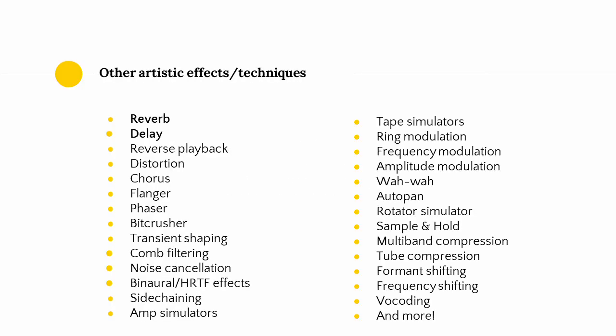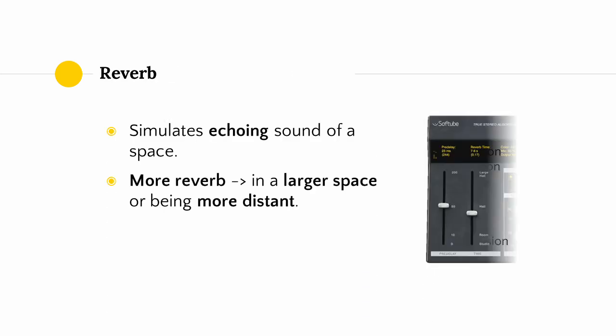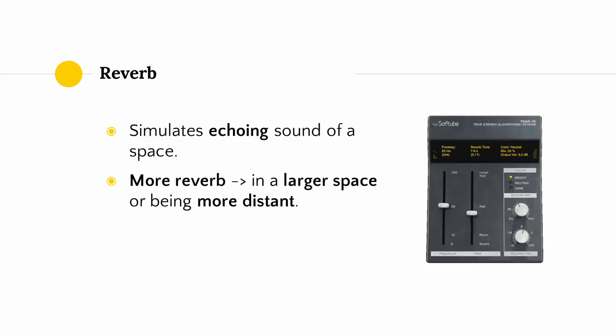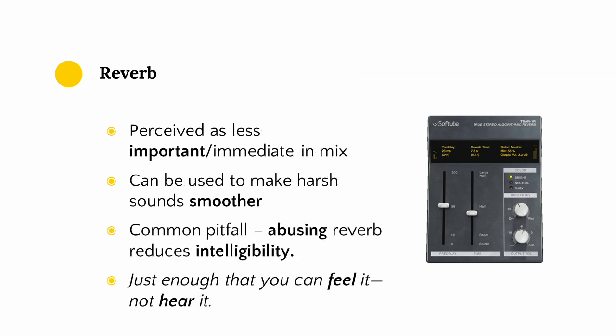Of course, when thinking artistically, we don't have to limit ourselves to the standard utility effects like compression and EQ. There are innumerable other effects used for artistic purposes during mixing. The ones we're going to focus on are reverb and delay. Reverb is a type of effect that simulates the echoing sound of a physical space — the more reverb on a sound, the more it will be perceived as occurring in a larger space or being more distant. Sounds with more reverb are generally perceived as less important in the mix. Reverb can also take harsh sounds and make them sound smoother, but you can push this too far. The rule of thumb when using reverb is: use just enough reverb that you can feel it, not hear it.